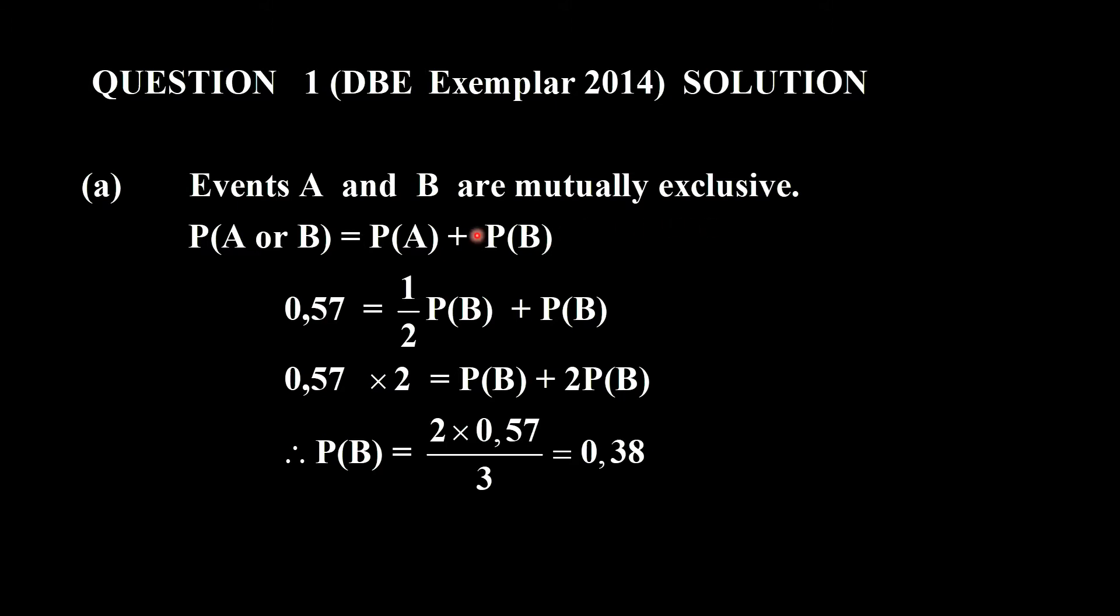We are given that the probability of A or B is 0.57. We are given that the probability of A is equal to a third of probability of B, a half of probability of B. I can then simplify, I can multiply everything by a 2.